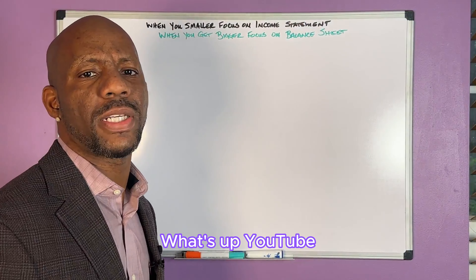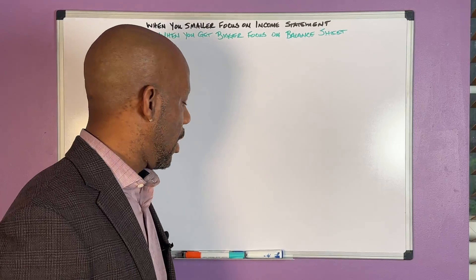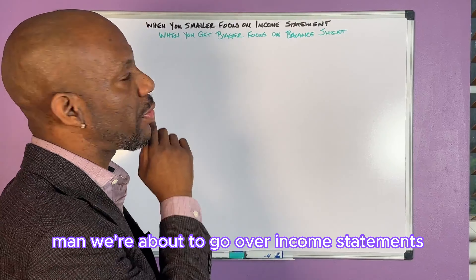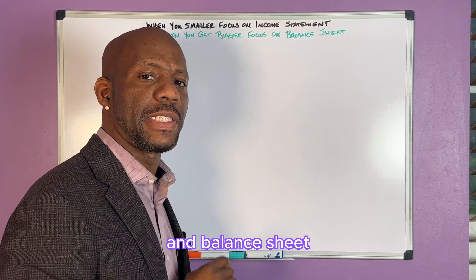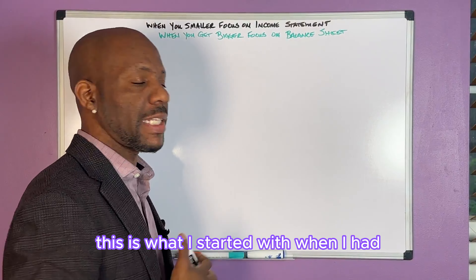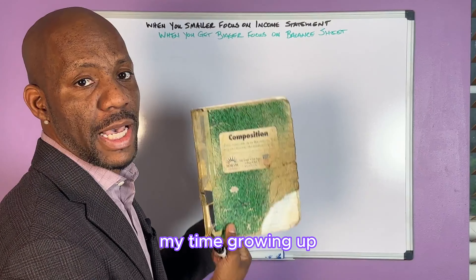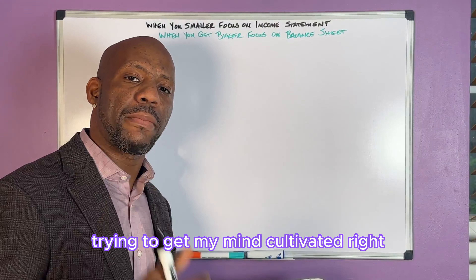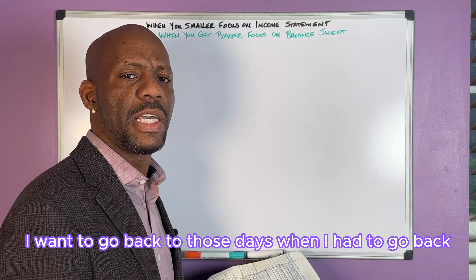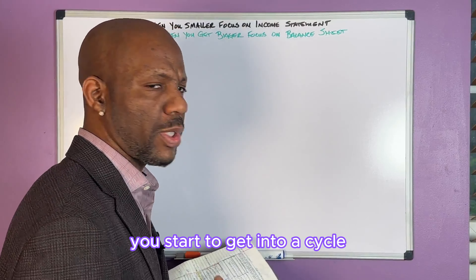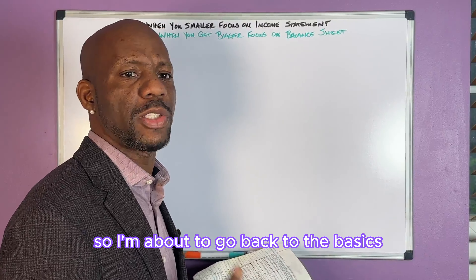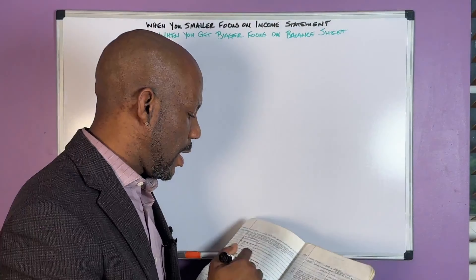What's up, you two? I'm here today to give you some great knowledge. We're about to go over income statements and balance sheets, real simple and plain. This is what I started with when I was growing up trying to get my mind cultivated. I want to go back to those days — every time you get in business you start to get into a cycle, and it's real good sometimes to go back to the basics.